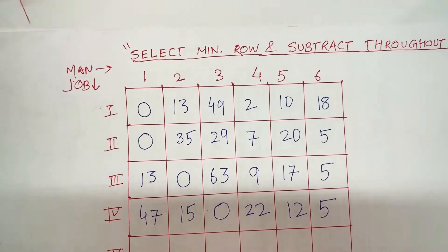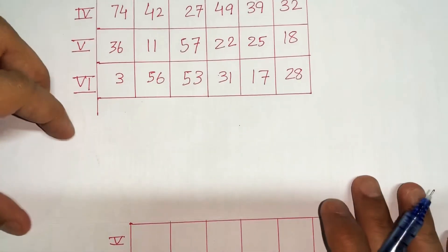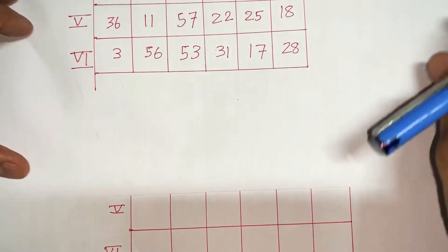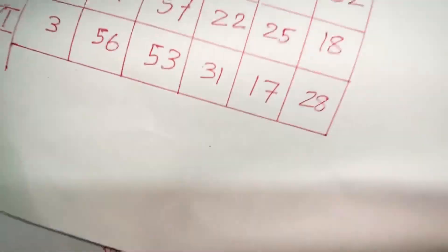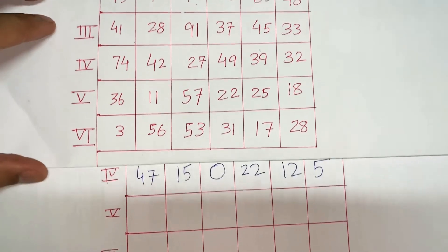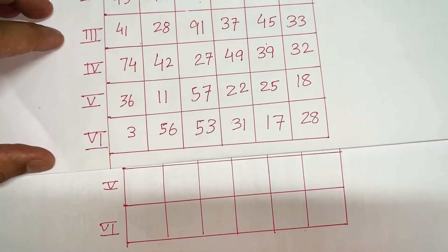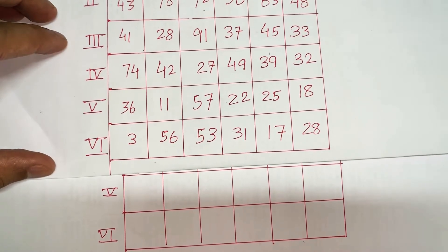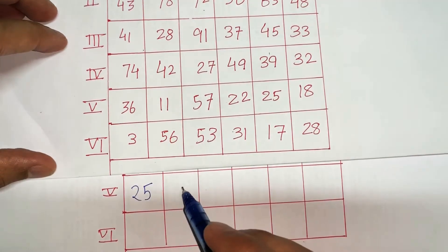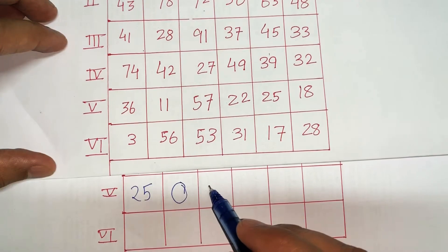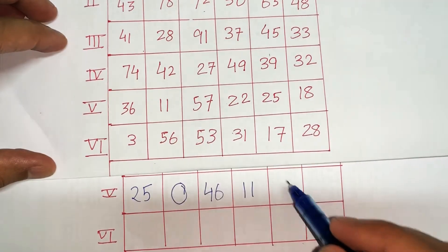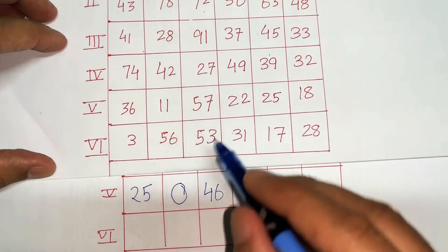Now look at the fifth row. The minimum is 11, and I am going to subtract 11 throughout: 36-11=25, 11-11=0, 57-11=46, 22-11=11, 25-11=14, and 18-11=7.